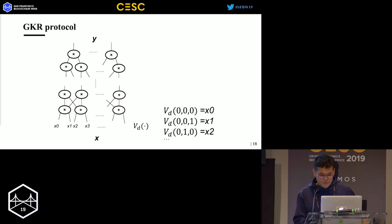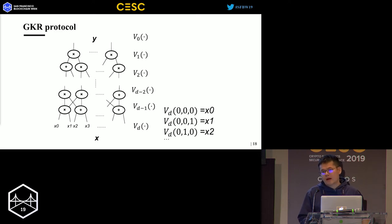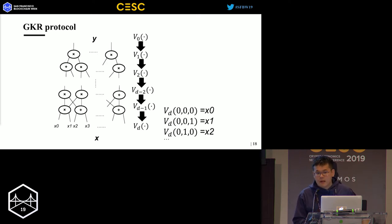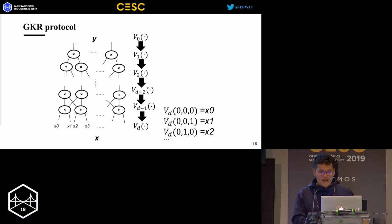So we know V_D(0) equals X0, V_D(1) equals X1, V_D(2) equals X2, and so on. We can similarly define such a function for each layer from V0, V1 to V_D. When the verifier gets the output in the first round, he gets a statement about polynomial V0 defined by the output. He then reduces this statement layer by layer — V0 to V1, V1 to V2, and so forth — until finally it reduces to a statement about V_D, which is defined by the input X. In the original GKR protocol, the verifier knows the input itself, so it can verify correctness directly.